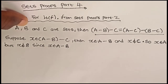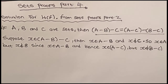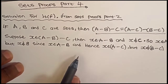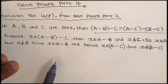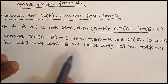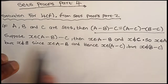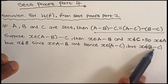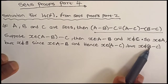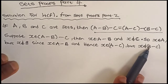Hence x is in A-C. But x is not in B-C. This is true because x is in A and x is not in C, so it will be in A-C. And since x is also not in B, it won't be in B-C, because for it to be in B-C it has to be in B. So it's not in B and it's also not in C, meaning it won't be in B-C.